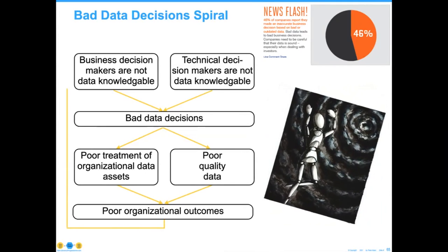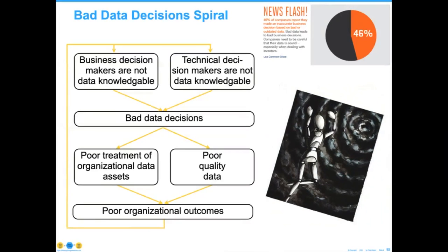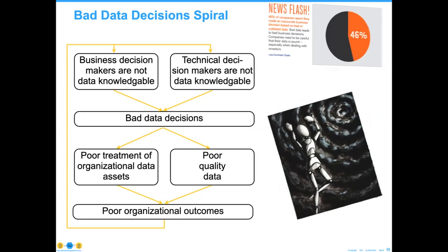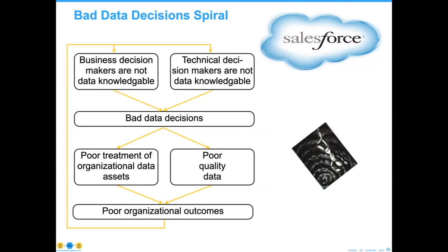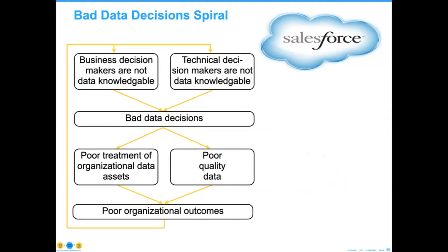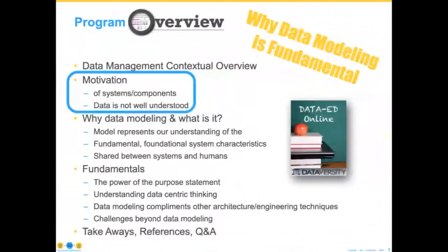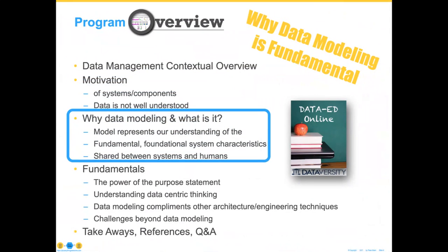Most technology decision makers are not data knowledgeable; therefore, they make bad data decisions, allow us to use poor quality data models that result in poor treatment of organizational assets and poor treatment of data, which results in poor outcomes. The most recent example I'm seeing is Salesforce — they do a great job with their software, but if you put Salesforce in and then decide you're going to clean up the data, you're not going to make Salesforce look very good.